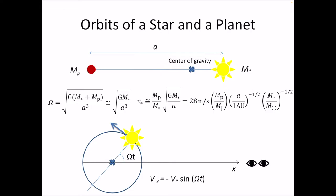We would like to estimate the rotational speed of a star around the center of gravity. The angular velocity of the system can be calculated using the square root of G times the sum of the masses of the planet and star, divided by a cubed, where a is the distance between the star and the planet. If the mass of the star is much greater than the mass of the planet, then the angular velocity is approximated as the square root of G times the mass of the star divided by a cubed.